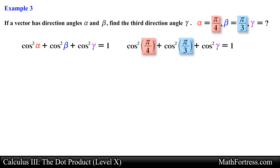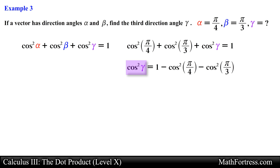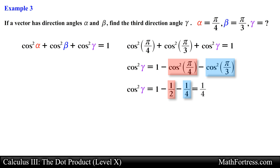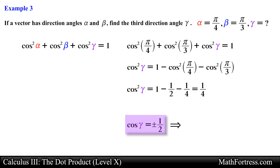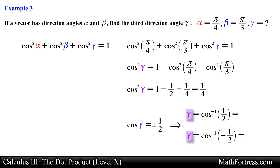Next, let's go ahead and solve for cos squared gamma. Now let's evaluate the expression on the right side and simplify. We can now go ahead and take the square root of both sides. This will yield two distinct solutions, so we break apart this expression into two separate equations and solve for gamma separately. Taking inverse cosine and evaluating, we obtain the following angles for gamma. In our next video we will go over our last application of the dot product and find the work done by constant forces.